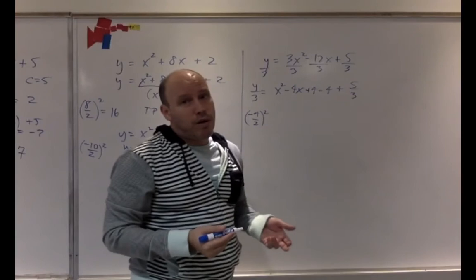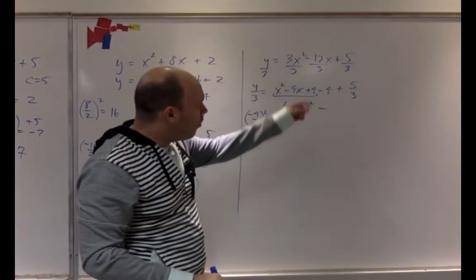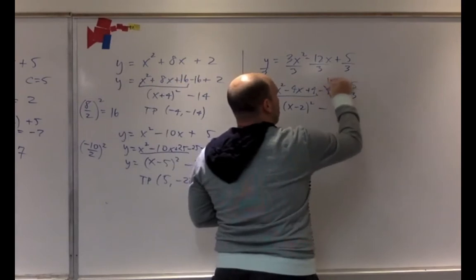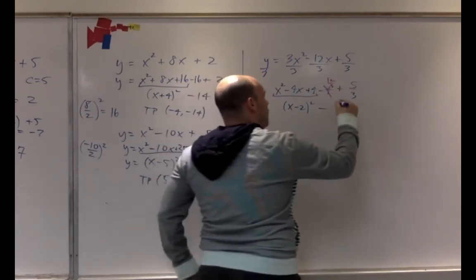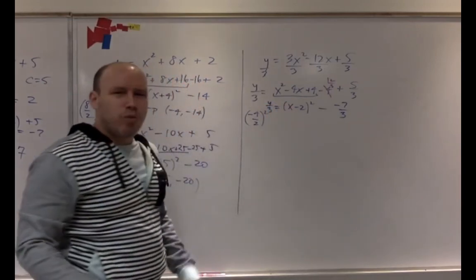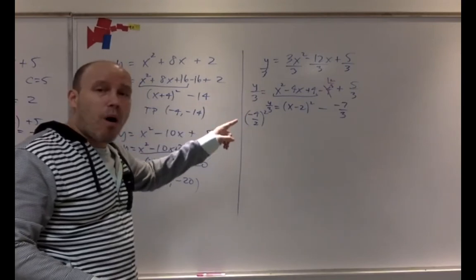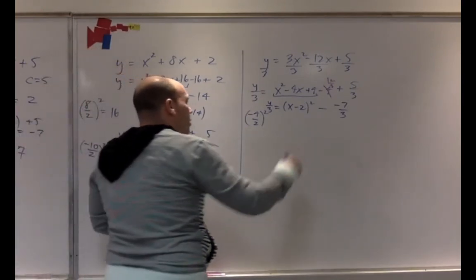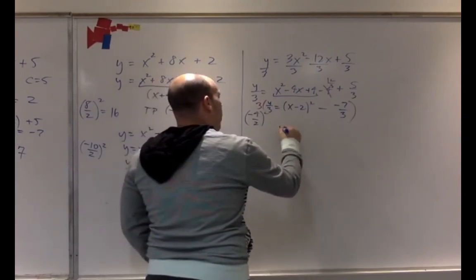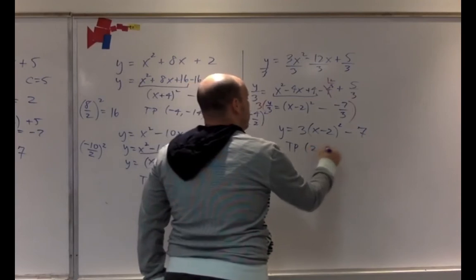You recognize this as (X minus 2) squared, and noting that 4 equals 12 over 3, you get negative 7 over 3 as the constant. Since the equation was Y over 3 equals this, multiply everything by 3, and you end up with Y equals 3 times (X minus 2) squared minus 7. The turning point is 2, negative 7.